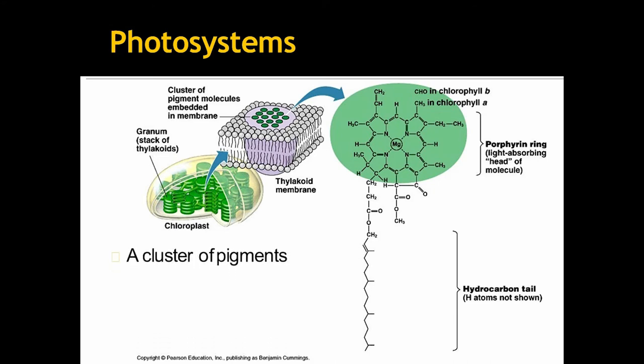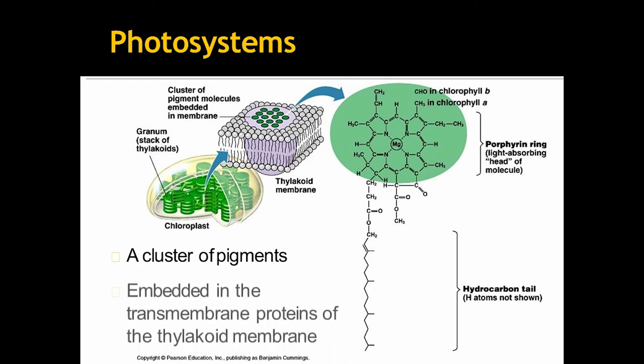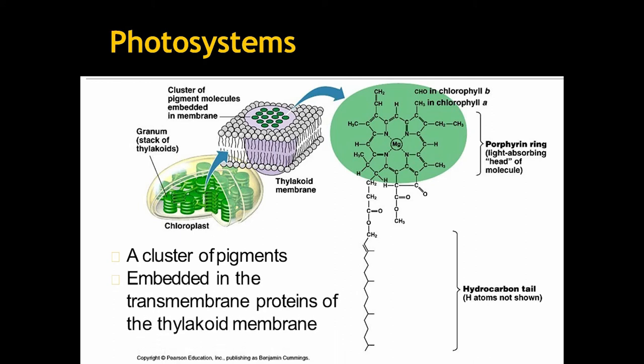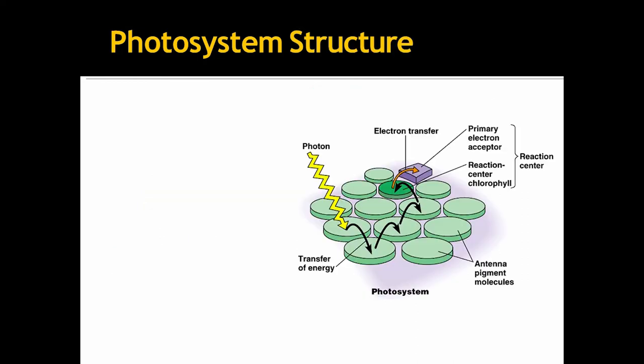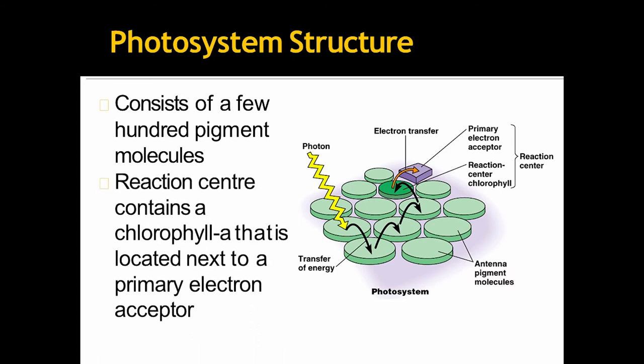Photosystems. A cluster of pigments embedded in the transmembrane proteins of thylakoid membranes. The structure of photosystems are consisting few hundred pigment molecules that mean chlorophyll A, B, etc. Reaction center contains a chlorophyll A that is located next to a primary electron acceptor. Look the image.